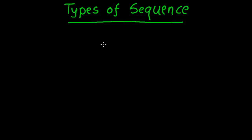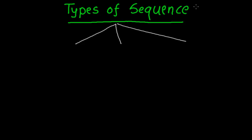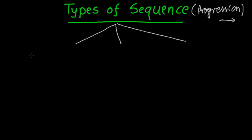Today we are going to learn about the types of sequence. In our school level, we learn three types of sequence. Sometimes the sequence is also referred to as progression, since it is increasing or decreasing following certain fixed rules. So there are three kinds of progression, or sequence, or series that we have to learn.